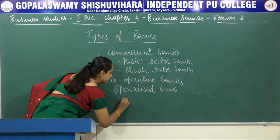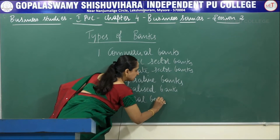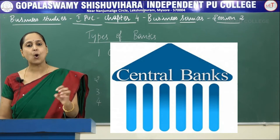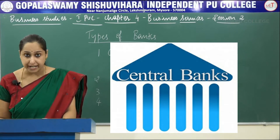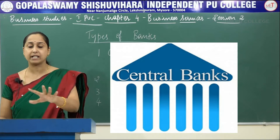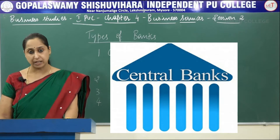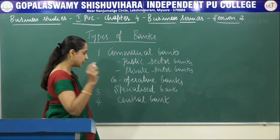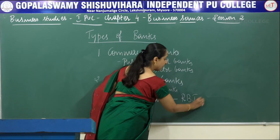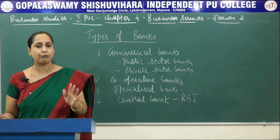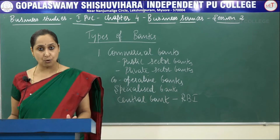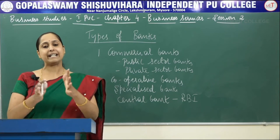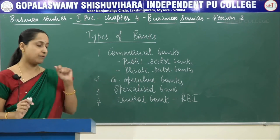The next type is central bank. The central bank supervises, controls, and regulates all the activities of commercial banks of the country. The central bank of our country is RBI — Reserve Bank of India. It regulates, controls, and supervises the activities of commercial banks, and also controls and coordinates the currency and credit policies of the country.